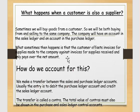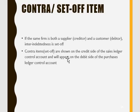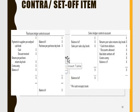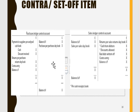Now about the contra entry: a contra entry occurs when your customer also becomes your supplier, or your supplier also becomes your customer. These entries are called contra entries or set-off items. In the purchases ledger control account, the contra entry is recorded on the debit side, while in the sales ledger control account the same entry is recorded on the credit side.